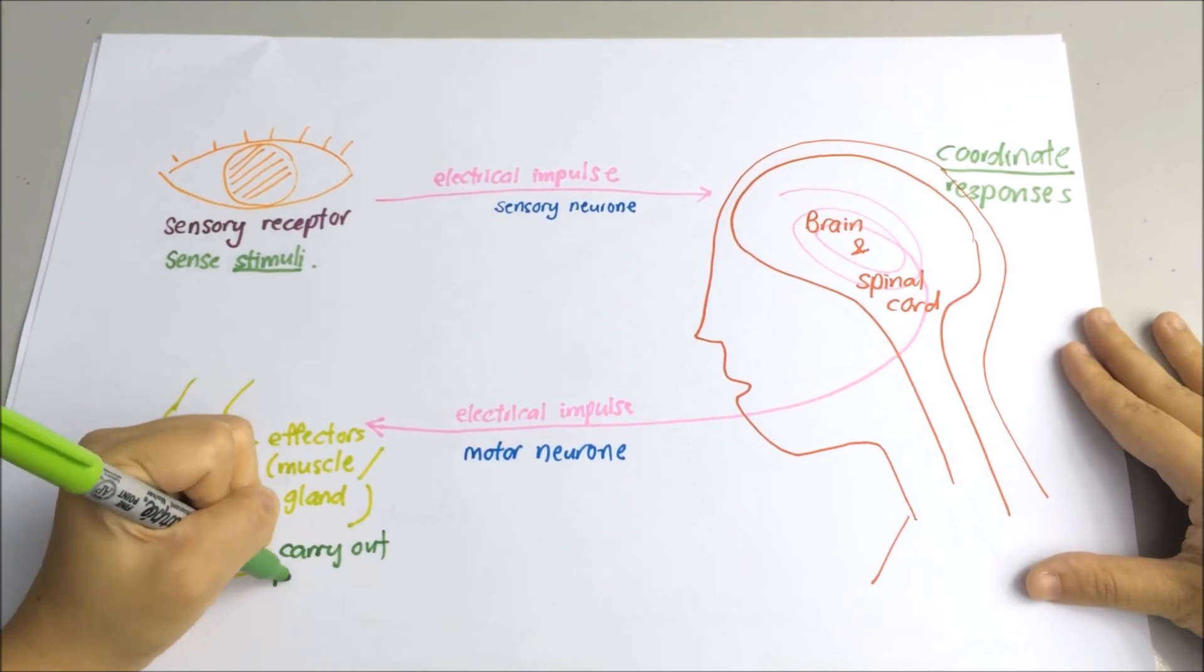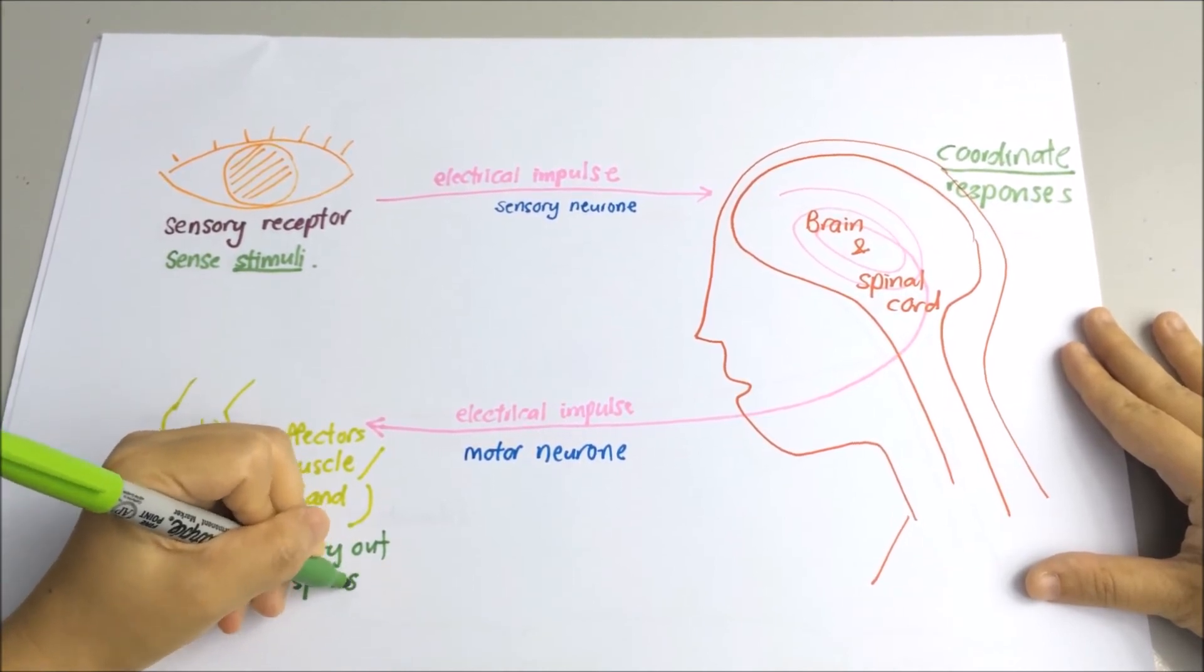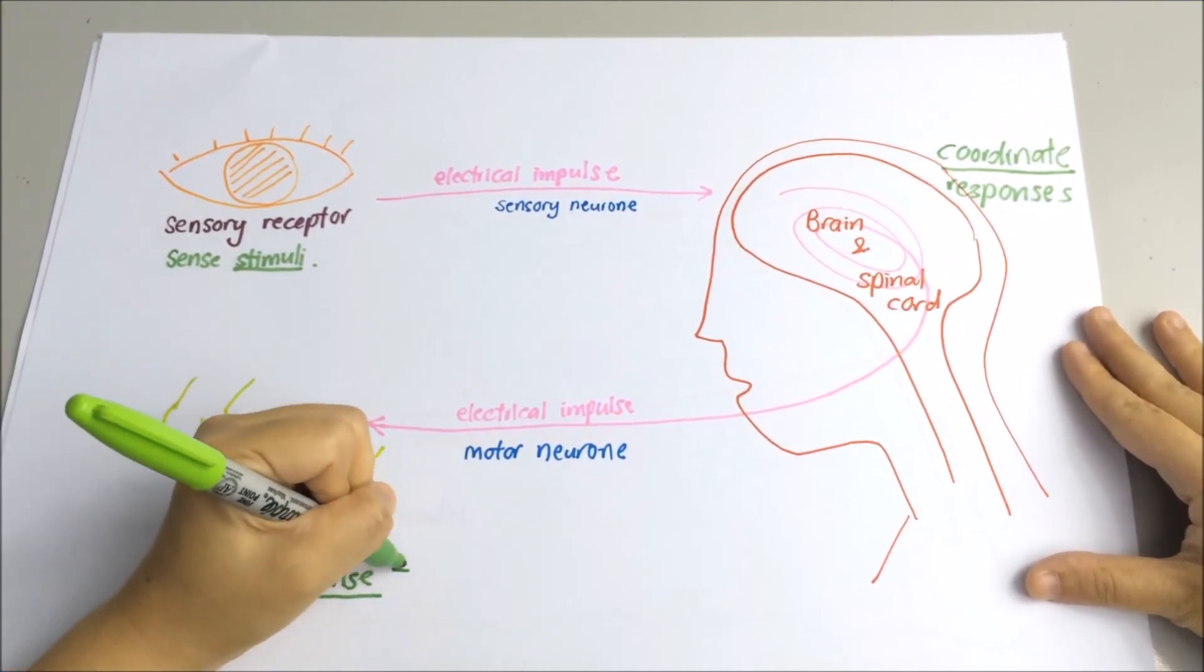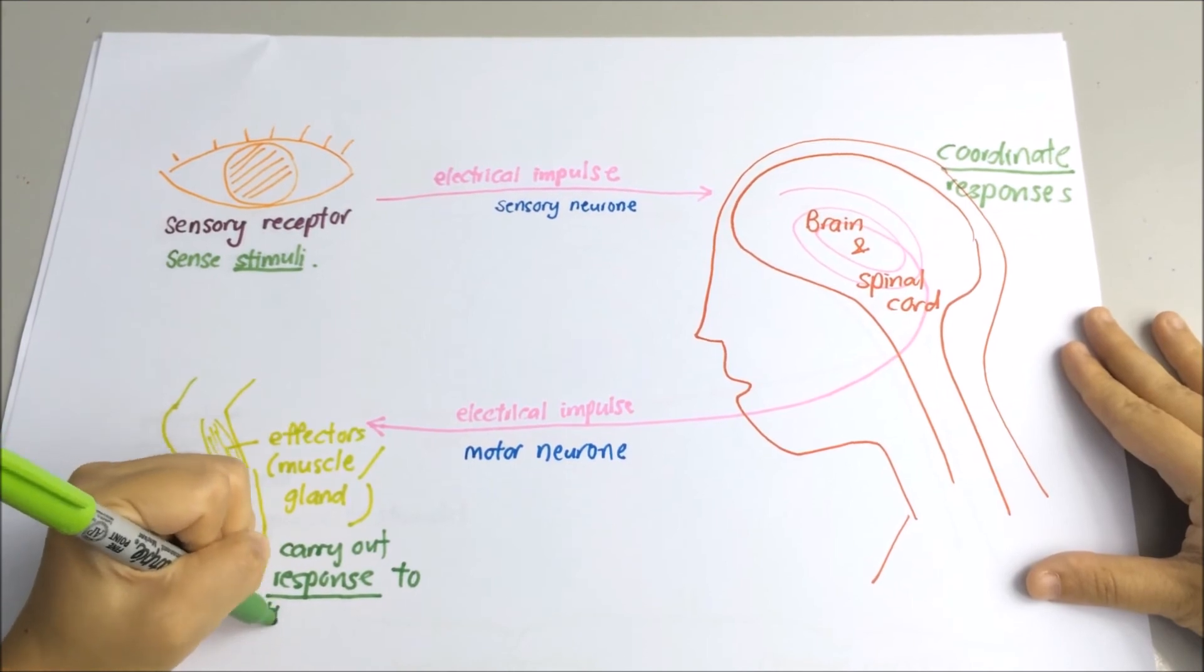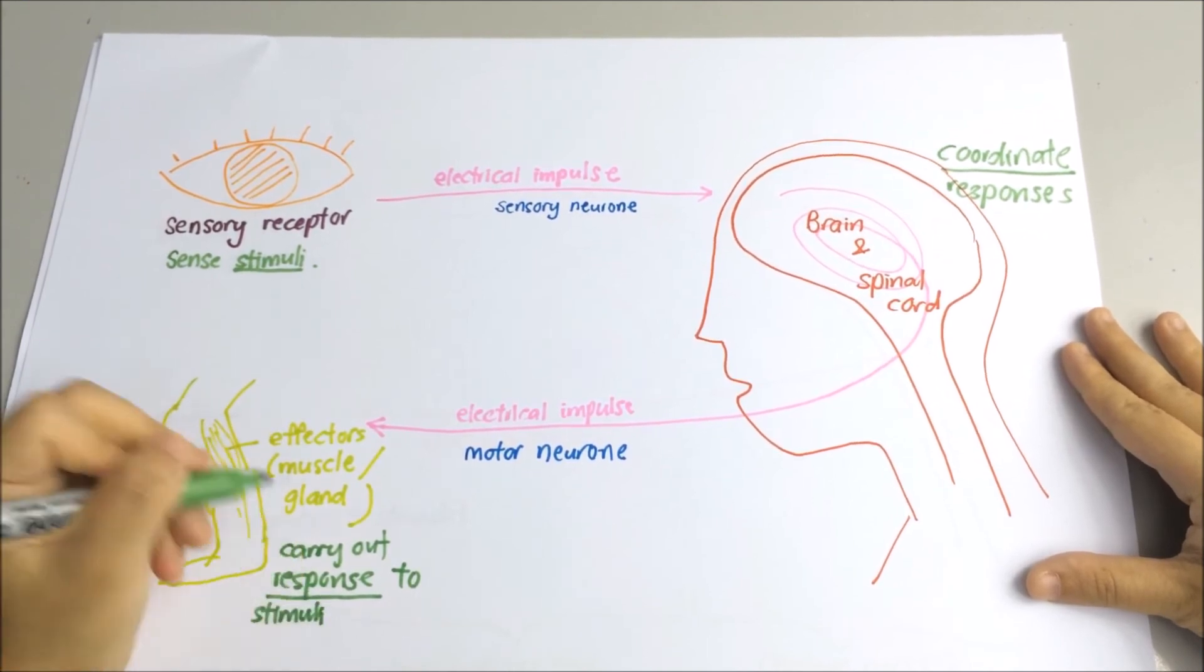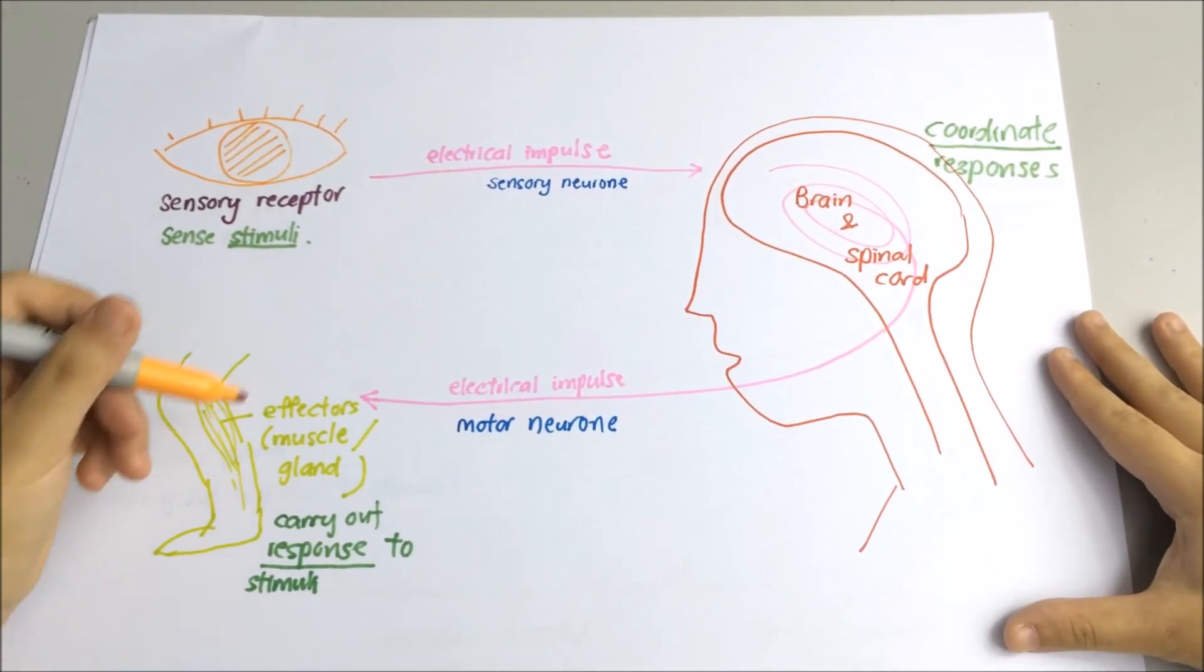Then, the nerve will shoot a message of pain to your spinal cord and brain in the form of electrical impulse. The brain will then process the message and formulate a response.